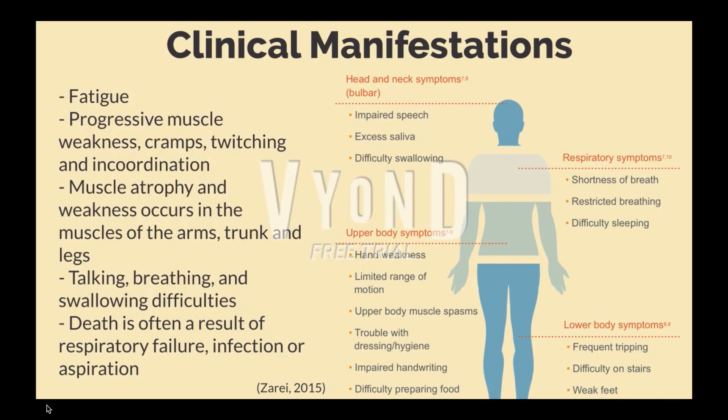Let's go over the clinical manifestations of ALS. Muscle weakness occurs gradually and is the most common symptom. The patient also experiences fatigue, muscle cramps, twitching, and incoordination, which often result in tripping and falls. Muscle atrophy occurs in the muscles of the arms, trunk, and legs, which interferes with range of motion and the ability to complete activities of daily living. Shortness of breath and dysphagia also occur. The patient experiences difficulties with speech that worsen as the disease progresses. Death is typically the result of respiratory failure, infection, or aspiration.